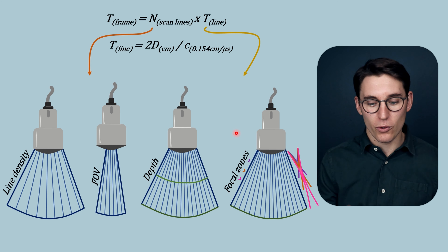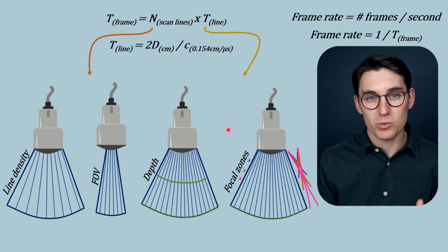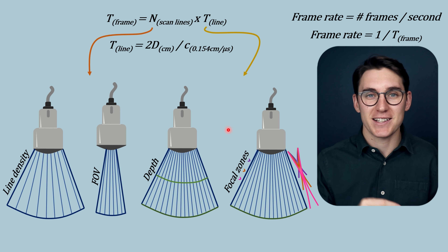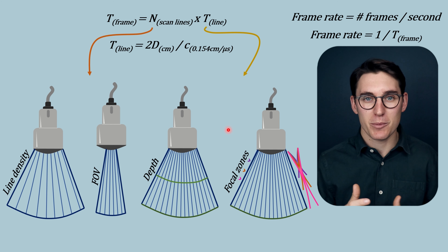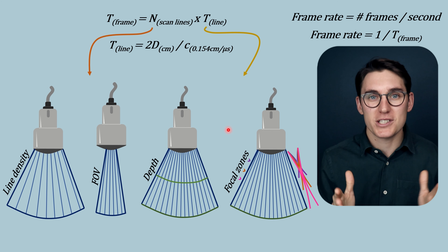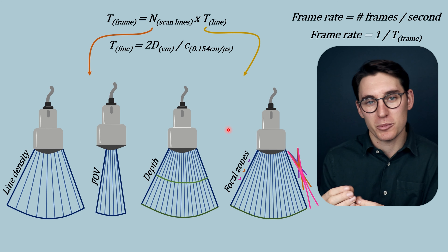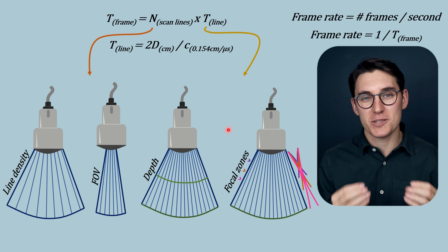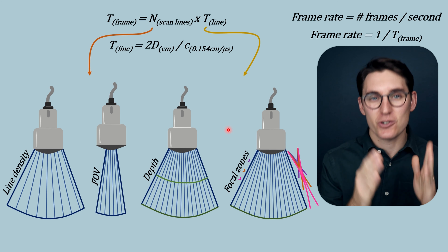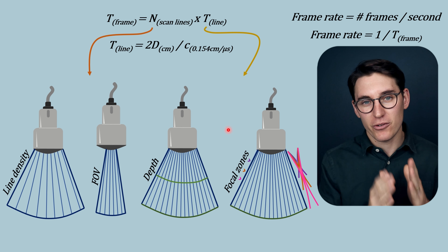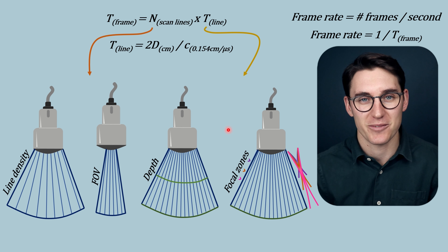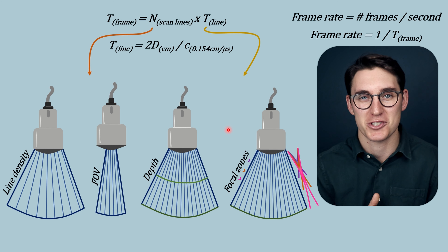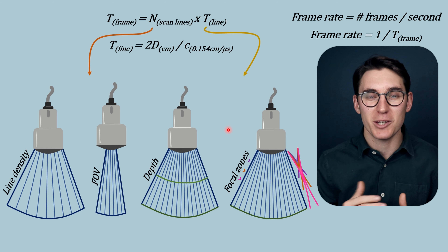Knowing these parameters and how they affect frame rate is all you need to understand temporal resolution. To get the best temporal resolution, image at the shallowest depth possible, with the smallest field of view, fewest focal points, and the least number of scan lines. Changing these parameters comes at a cost, and we need to trade off what is more important — is lateral resolution more important, or are we trying to track fast movements? Hopefully by now you have a good conceptual understanding of axial, lateral, elevational, and temporal resolution, and which factors to change to manipulate resolution.